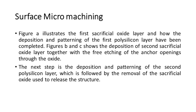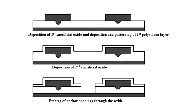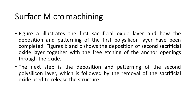Figure A illustrates the first sacrificial oxide layer and how the deposition and patterning of the first polysilicon layer have been completed. Figures B and C show the deposition of the second sacrificial oxide layer, together with the etching of the anchor openings through the oxide. The next step is the deposition and patterning of the second polysilicon layer, which is followed by the removal of the sacrificial oxide used to release the structure.